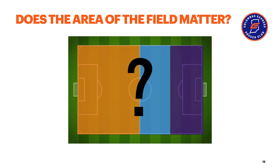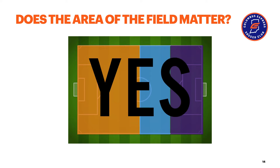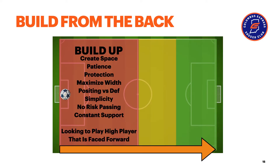Some questions we need to start asking ourselves: does the area of the field matter? Whether we've been working on building out of the back third or moving into the middle and final thirds — the answer is yes. The areas of the field absolutely matter. When building from the back, we want to create space, have patience but also protection, maximize width, and have positioning appropriate for defending if we lose the ball. Simplicity is needed out of the back — we don't want risky passes into congested areas that may lead to counterattacking opportunities for the opponent.